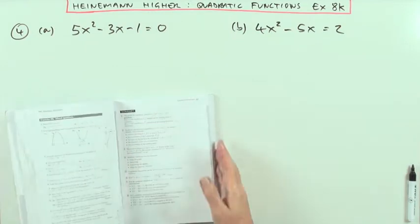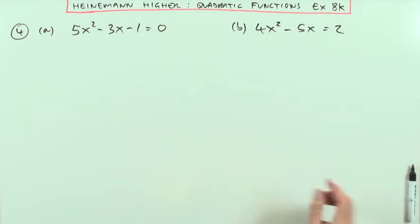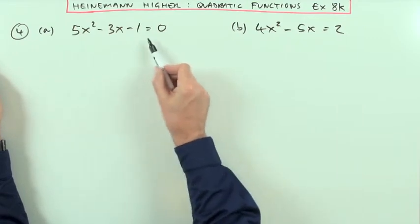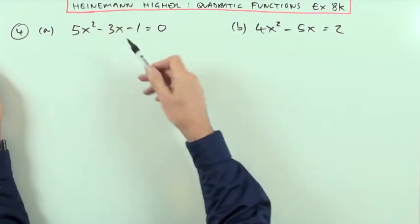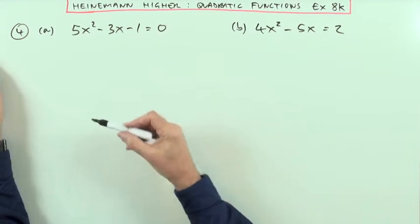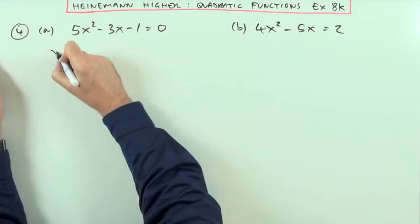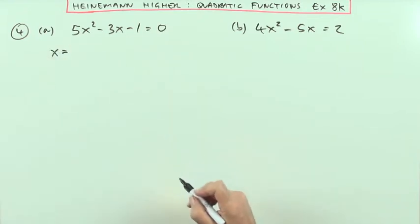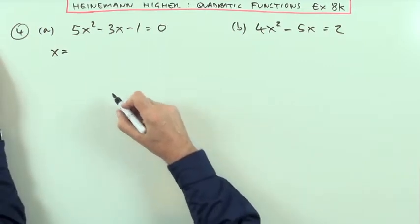Question 4 is solve these equations which don't factorise, so you just need to use the formula. You could complete the square if you like, but that would just be a long way around to end up with the same result as the formula. Without any further ado, because it is the higher level, I don't need to spell it all out.